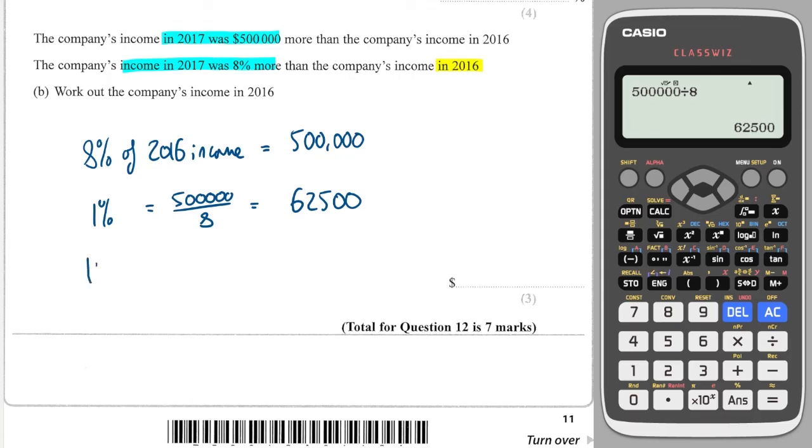And then if you want to work out 100% of 2016's income, then we do times by 100. And we take this and we times it by 100, and this gives us $6,250,000.